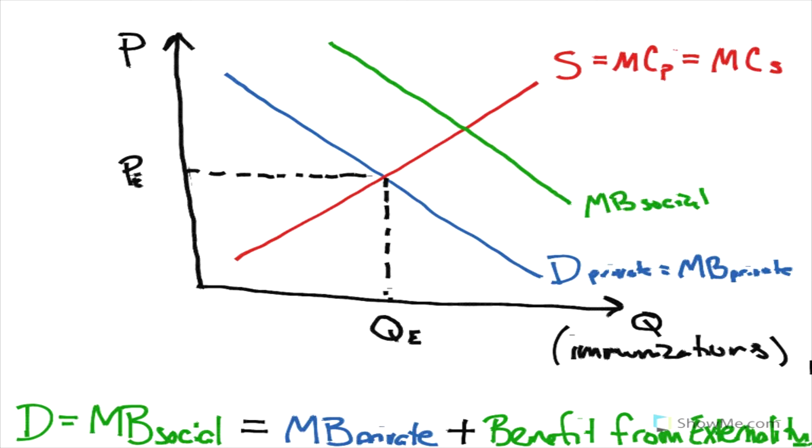So without any intervention, the market will consume at this equilibrium point here. However, it's most beneficial for society to consume at the socially optimal equilibrium, which is found here, at a quantity, this QS quantity.